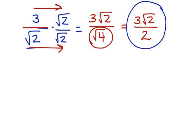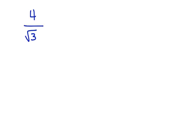Let's look at one more where we need to rationalize the denominator. 4 divided by the square root of 3. First we rationalize the denominator. We multiply both the numerator and the denominator by the square root of 3. Now we multiply across.